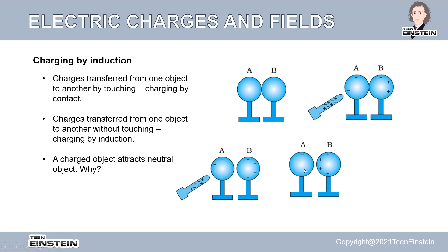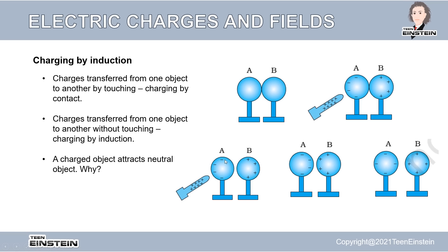When we remove the glass rod, the negative charges in A redistribute and A becomes negatively charged, while B becomes positively charged. We started with two neutral metal balls and now they are charged. If we separate them further, we have a perfectly negatively charged sphere A and a perfectly positively charged sphere B. This is called charging by induction — we did not touch or rub the objects; we simply induced the charges by separating the positive and negative charges in the neutral object.